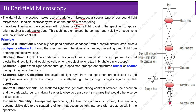The principle involves oblique illumination: a specially designed dark field condenser with a central circular stop directs oblique or off-axis light onto the specimen from the sides at an angle, preventing direct light from entering the objective lens, as you can see here in the diagram. This is the oblique or off-axis light coming from the sides, unable to come from the center due to the presence of the opaque disc.